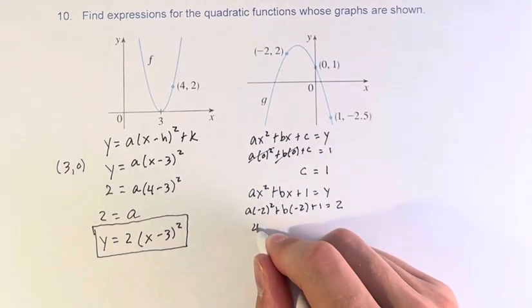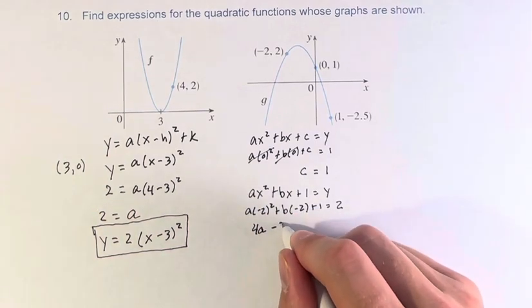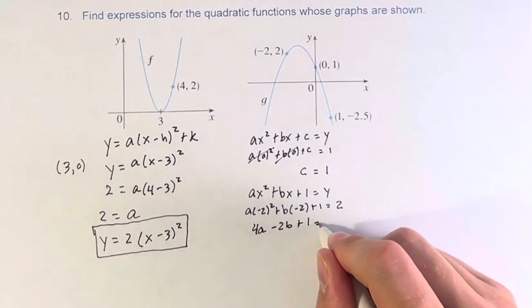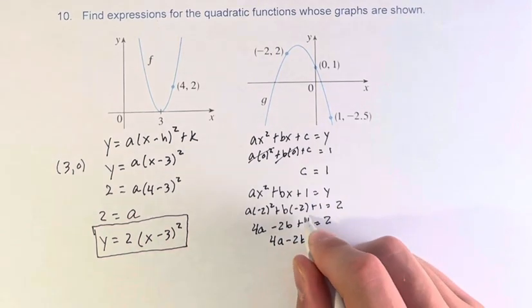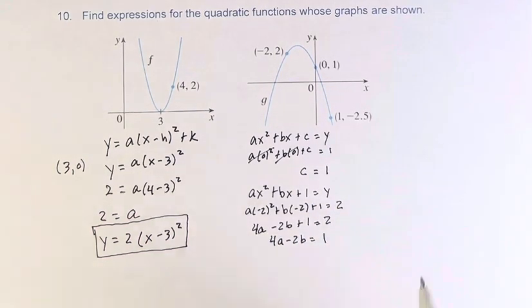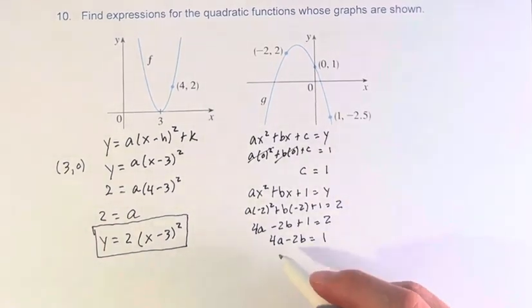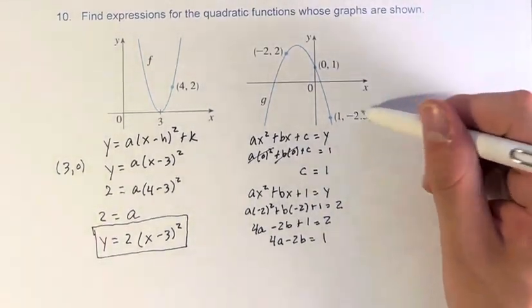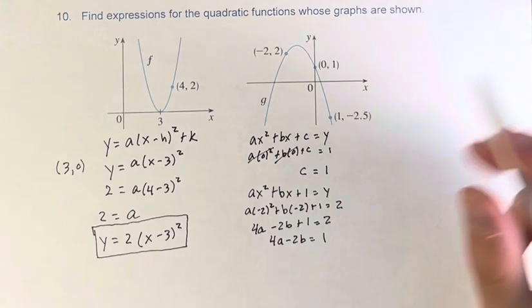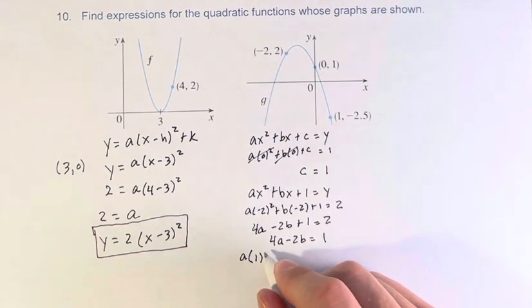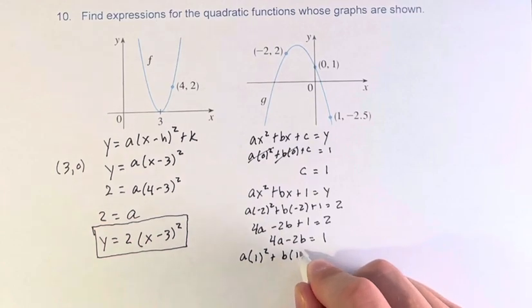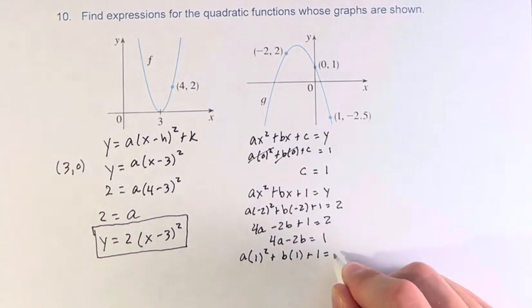Negative 2 squared is 4a minus 2b plus 1 equals 2. Therefore, 4a minus 2b, subtracting 1 from both sides, equals 1. We can do this also with the other point, (1, negative 2.5).